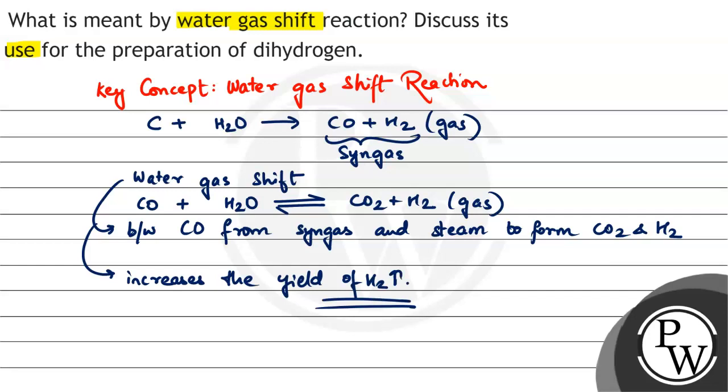As we can see, when we do coal gasification, we are getting H2 dihydrogen. But when we do water gas shift reaction, we can extract more hydrogen from the initial carbon that we took. This is how we solve this question.